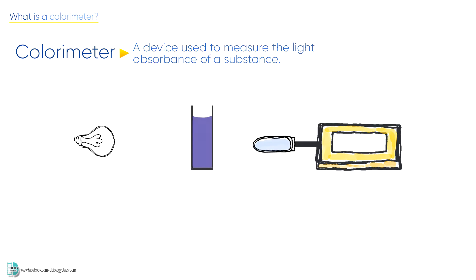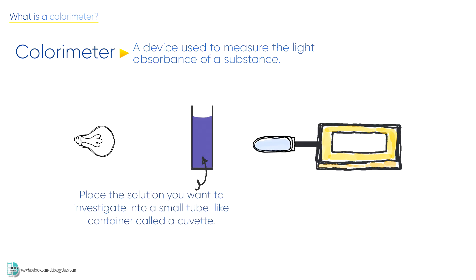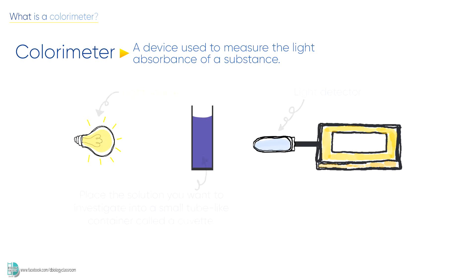You have to place the solution you want to investigate into a small tube-like container called a cuvette. Then allow light to pass through the solution. There is a light detector that can detect the amount of light passing through the solution under investigation.